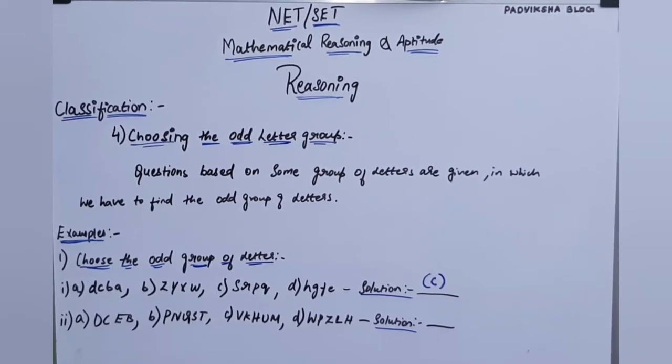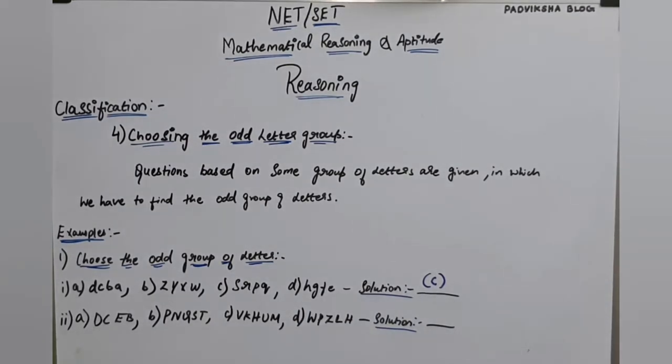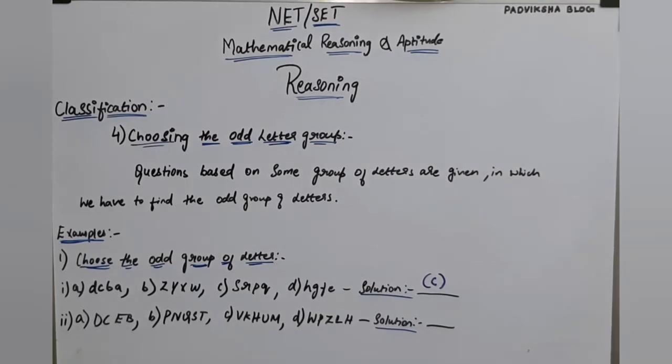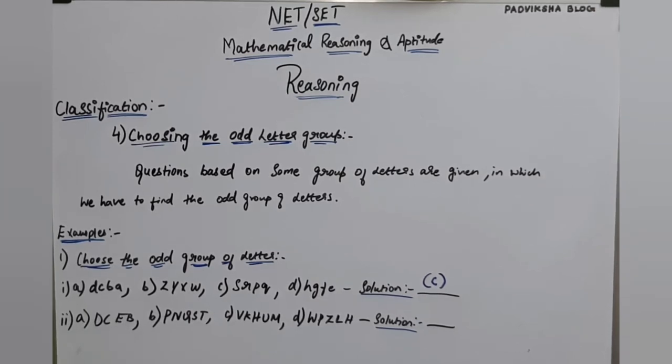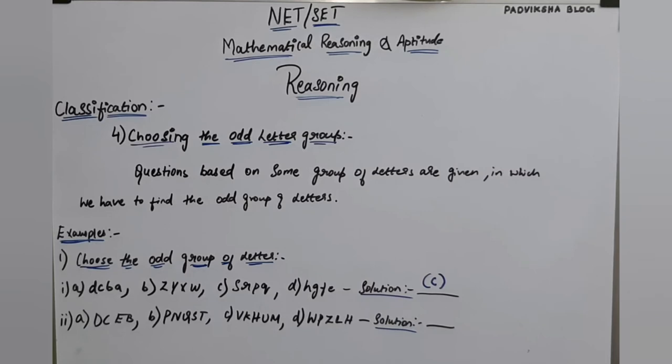Now, when you find these letter groups, the basic approach is to count how many letters are given. In the first question, all had four letters. But in the second question, the first option has five letters - all are groups of five letters.